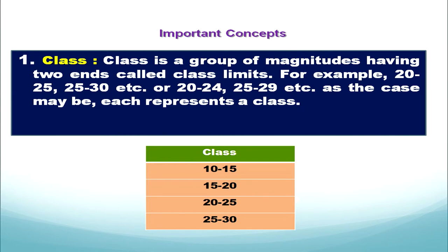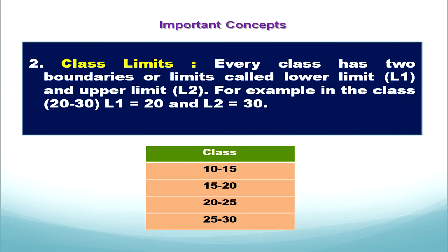In this example you can see different classes. Class 1 is 10 to 15, and the next class is 15 to 20. In both cases we have got two ends. The second concept is class limits. Every class has two boundaries or limits called lower limit and upper limit. In class 1, which is 10 to 15, the lower limit is 10 and the upper limit is 15. In the next class, 15 is the lower limit and the upper limit is 20.